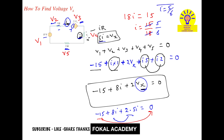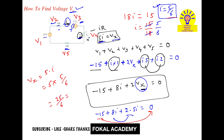According to the problem we want voltage Vx. We know the relation Vx equals 5I, so Vx equals 5 times 5 by 6, which is 25 by 6. Simplifying this gives 4.167 volts. So this is the Vx for the given problem.